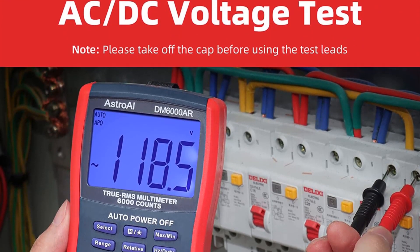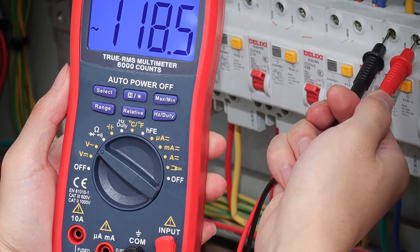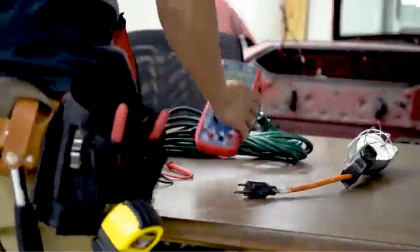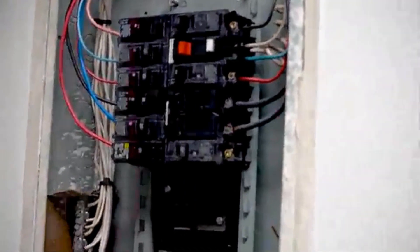If you can't live without auto range, have no fear, you'll find it here. Plus, the sampling speed is fairly quick at 2 times per second. This model will even determine whether the current you are measuring is AC or DC by itself.